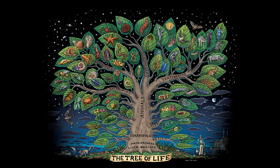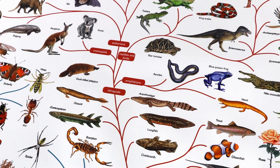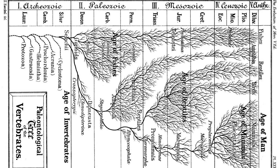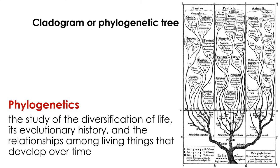In the tree of life, we connect taxa like animals, plants, fungi, protists, and bacteria. Each leaf is a species, and altogether the leaves represent the vast diversity of life forms on our planet. Although it may be impossible to create a truly complete tree of life, it does help us understand the relationships between the various forms of life on Earth. Importantly, the tree of life provides a model and research tool for exploring how life has evolved over time. Phylogenetics is the study of the diversification of life, its evolutionary history, and the relationships among living things that have developed over time.